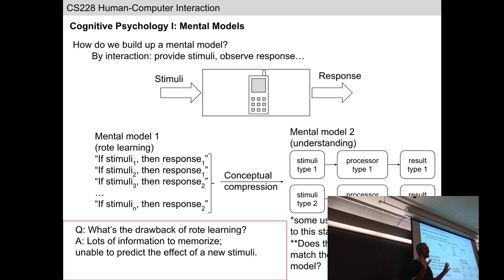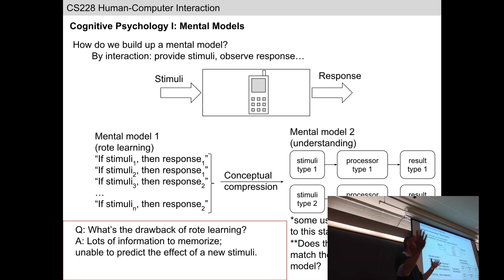If all you do is rote learning, you have a mental model, but it's not a very powerful one. Your mental model only says: 'You did this before and I know what result you got.' It can only tell you what happened based on what you did before — it can't predict the result of a new action. So lots of information to record and remember, but the mental model can't predict novel actions. Most of us, depending on whether we're learning objects in the world, a new cell phone, or a Leap Motion device, we push against the world and observe how the world pushes back.